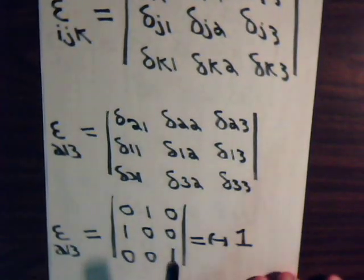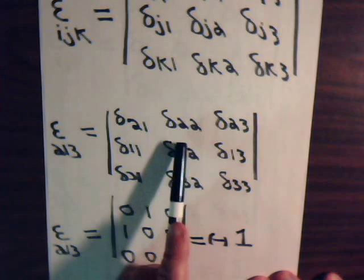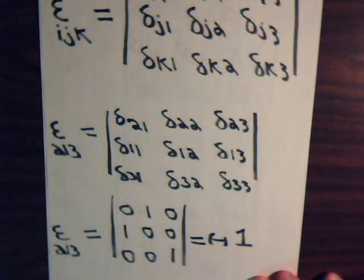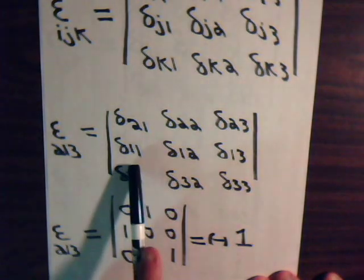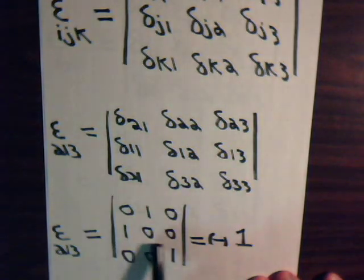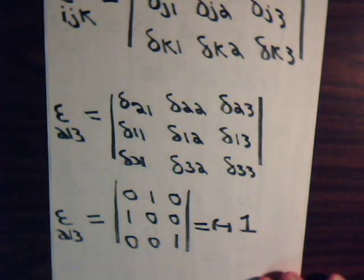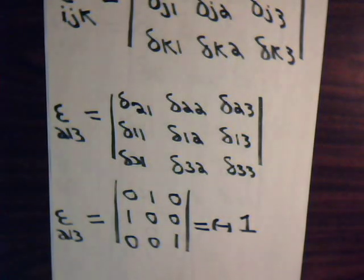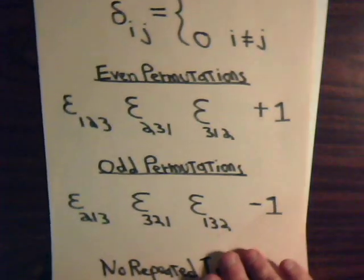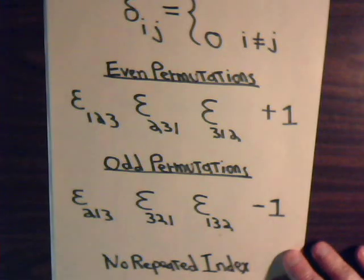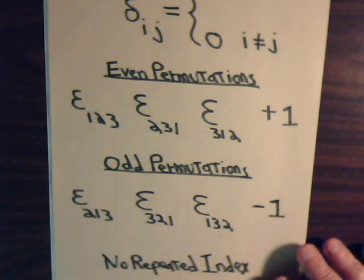That entry is zero; mismatched indexes give one there; and that would be zero with mismatched indexes. So the first row is zero, one, zero. Here we have one, zero, zero. And here, zero, zero, one. For this determinant, it has a value of negative one. And as you see, those results are consistent with what we said before — this is plus one, this is minus one — and these other combinations will, in determinant form, give us the same results.